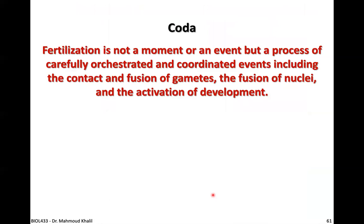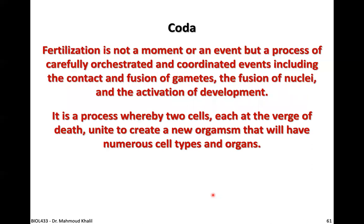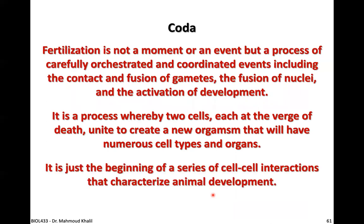As a coda, fertilization is not a moment or single event but a process of carefully orchestrated and coordinated events, including the contact and fusion of gametes, the fusion of nuclei, and the activation of development. It is a process whereby two cells, each at the verge of death, unite to create a new organism with numerous cell types and organs. It is just the beginning of a series of cell-cell interactions that characterize animal development.